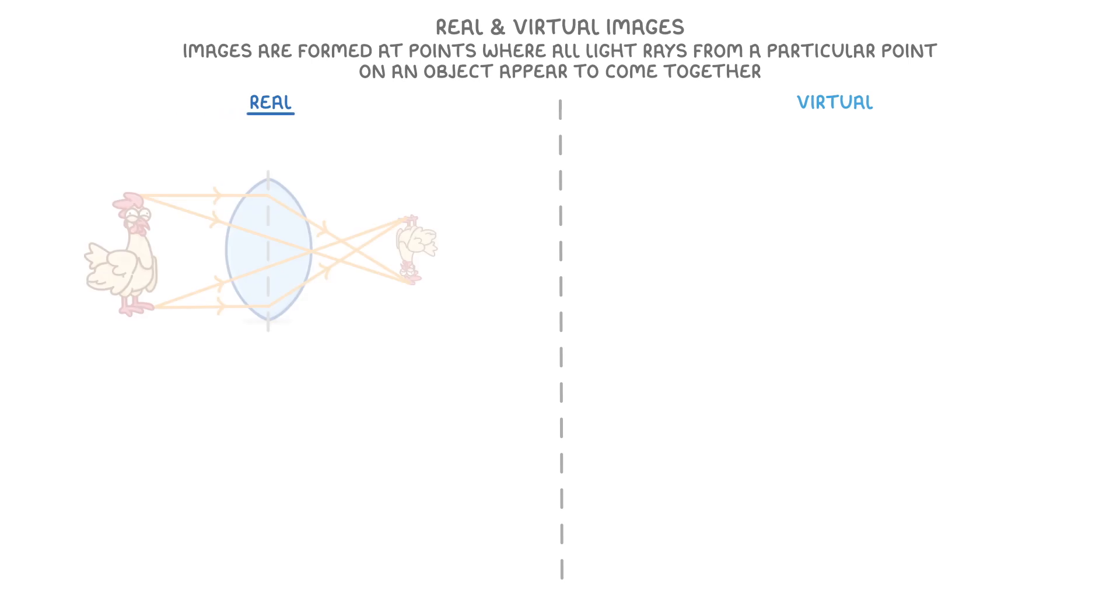A real image, like we can see here, is formed when the light rays actually do come together to form the image. For example, these light rays from the chicken's head pass through the lens and converge in the bottom right, which is why we see the chicken's head down at the bottom. Meanwhile, the light rays from the feet converge in the top right, and so we see the feet at the top.